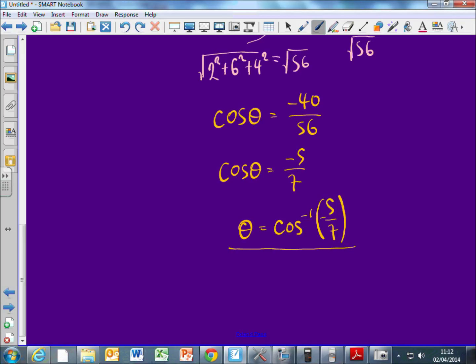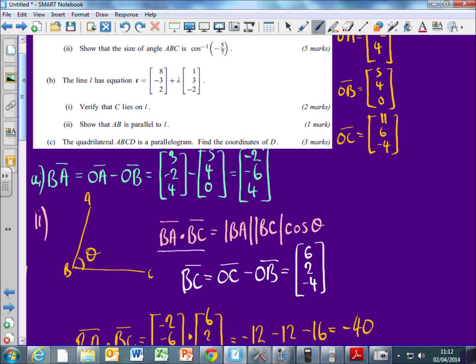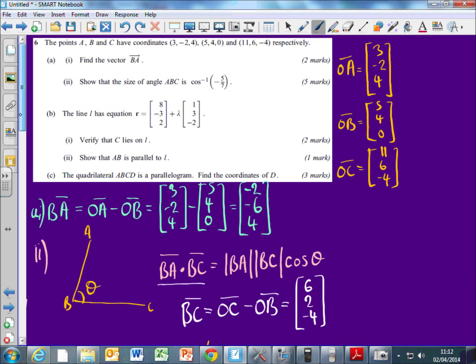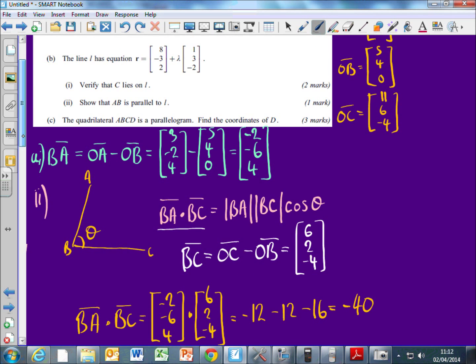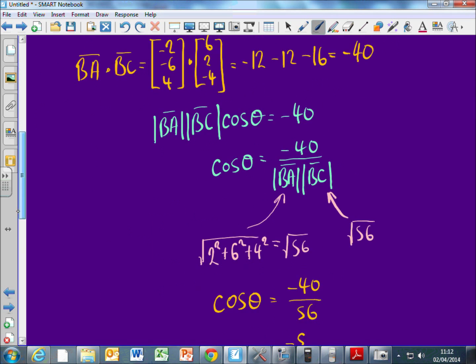So that's good. What's the next thing I've got to do? We've done the size of the angle. That was 5 marks. So now we've got a line equation. So let me write down the line equation. And we've got to verify that C lies on the line. So, what's the line equation? Can someone just tell me? Yeah. Plus lambda, 1, 3, 1, 3, negative two.